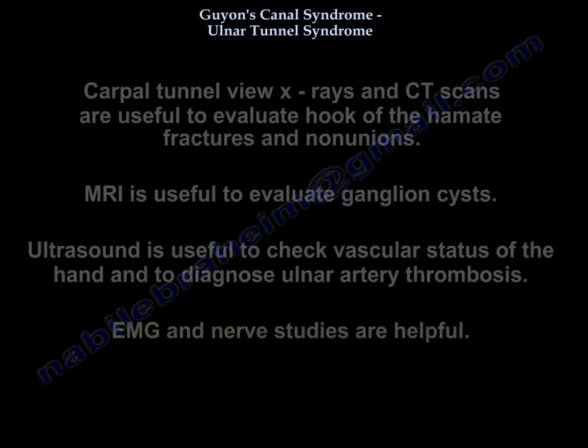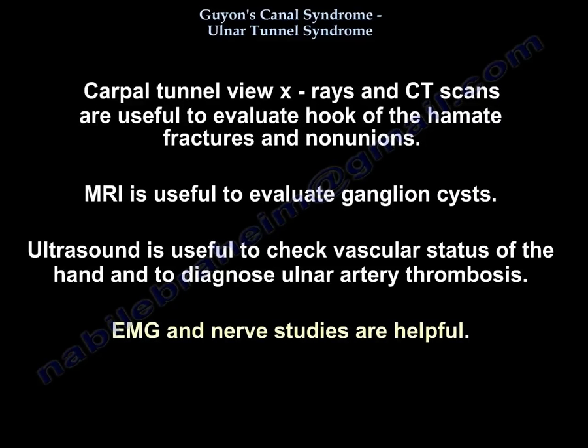Carpal tunnel view X-rays and CT scans are useful to evaluate hook of the hamate fractures and non-unions. MRI is useful to evaluate ganglion cysts. Ultrasound is useful to check vascular status of the hand and to diagnose ulnar artery thrombosis. Imaging and nerve conduction studies are helpful.